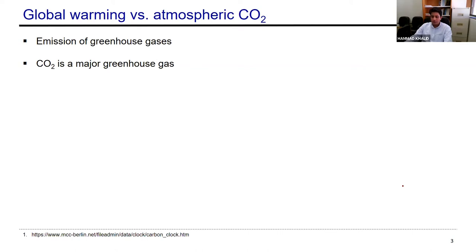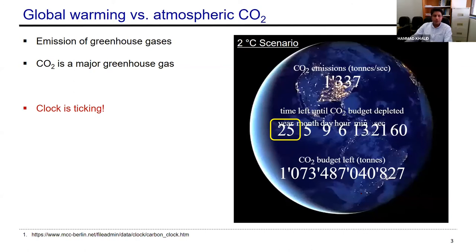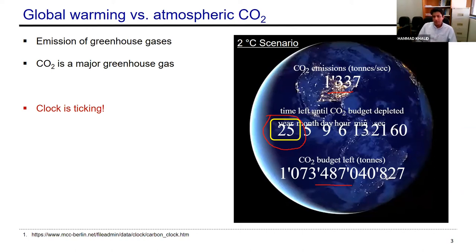This story starts from greenhouse gas emissions from different industrial plants and products. Among many greenhouse gases, CO2 is the major one. If we look at its impact on the environment, we have this carbon clock made by MCC in Berlin. It shows that if we are emitting this much amount of CO2 every second — approximately the worldwide quantity we are emitting today — looking at a scenario of two degrees centigrade increase in temperature, this is how much budget of CO2 is left. It will take us only 25 years to consume this budget, after which the global temperature of Earth can increase by two degrees centigrade. This is a huge estimation in terms of average temperature, so we need to take action and reduce emissions.